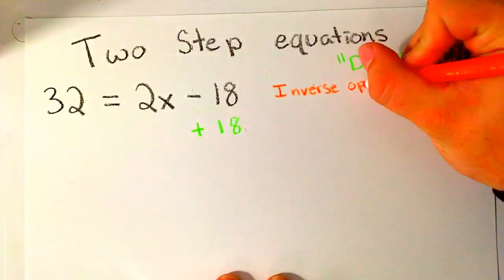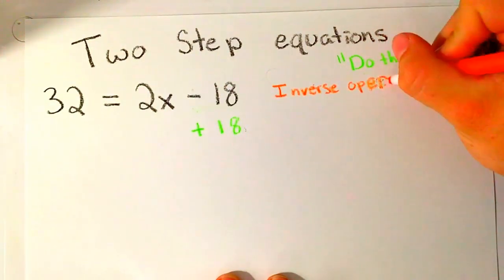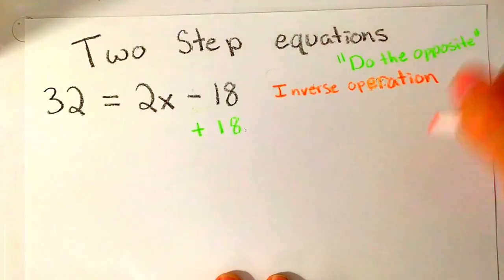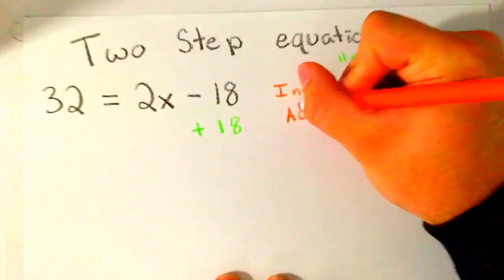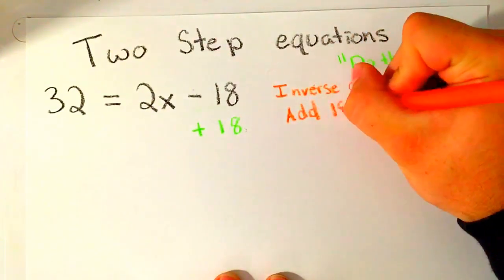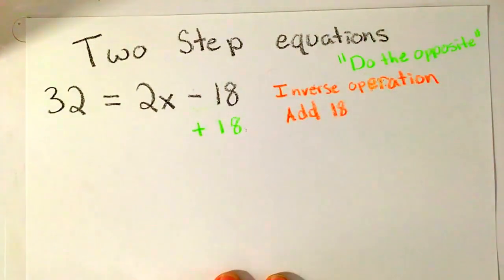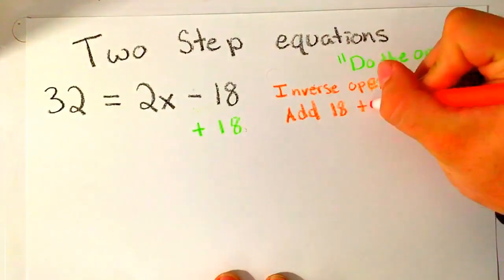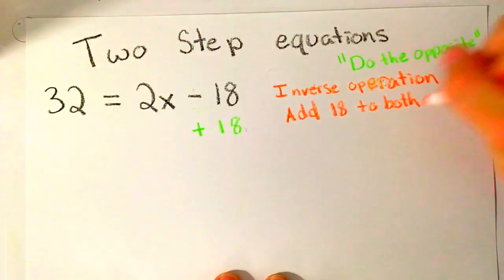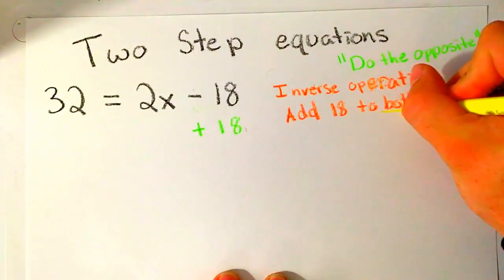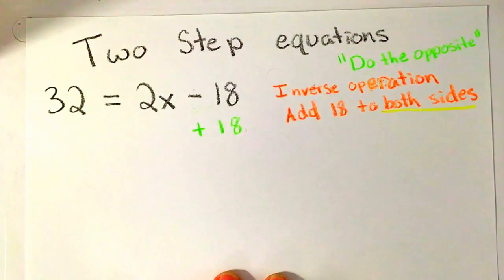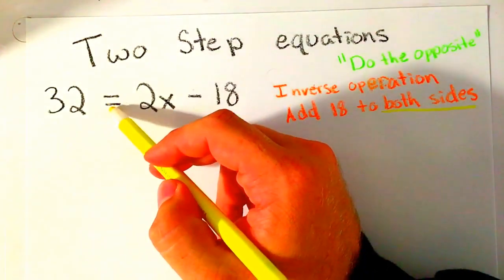The inverse operation that we just did was to add 18, but we don't just add it to one side because we have this thing called the property of equality. So we add 18 to both sides. What do I mean by both sides? Both sides means both sides of the equation.